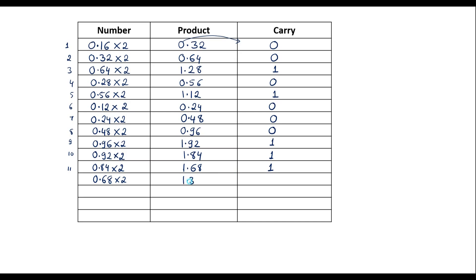Now 0.36 multiplied by 2 gives 0.72 — write 0. Then 0.84 from 1.84 gives carry 1. Next, 0.44 multiplied by 2 gives 0.88 — write 0 as carry. We must multiply fifteen times in total, and once we reach fifteen multiplications we stop.